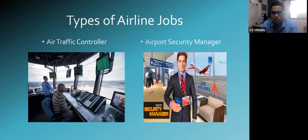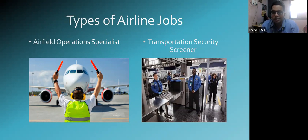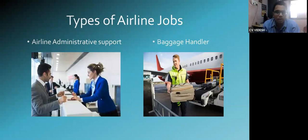Air traffic controllers make sure that each and every airplane flies according to the given directions and instructions. Then comes the airport security manager, who takes care of any problems with passengers. The airfield operations specialist makes sure the airplane is in the right position and ready to fly. The transportation security screener checks that the things you are carrying are proper.